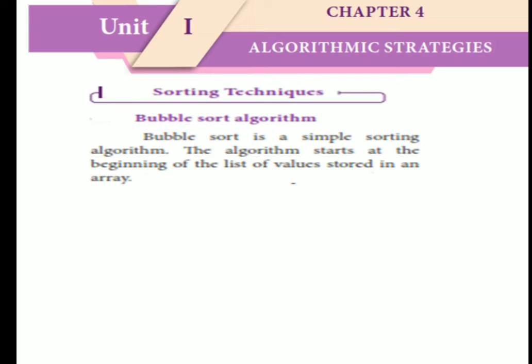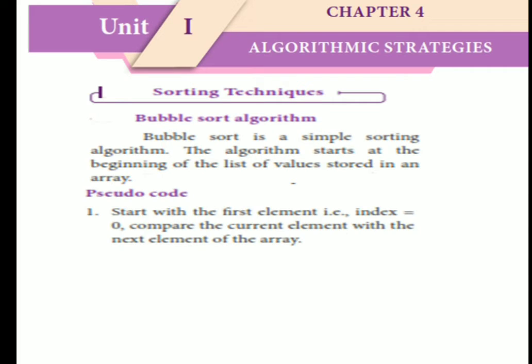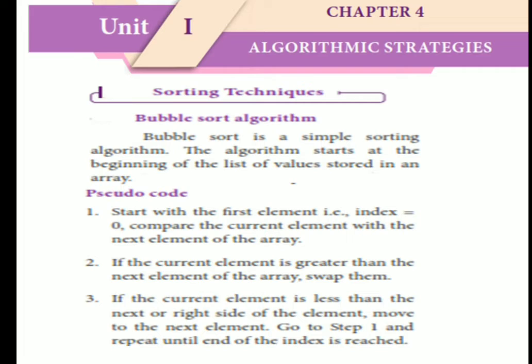Bubble sort algorithm: Compare the current element with the next element in the array. If the current element is greater than the next element, swap them. If the current element is less than the next element, move to the next element. Repeat this process until the end of the array is reached.